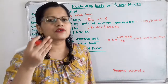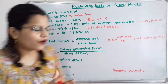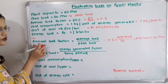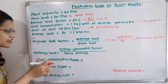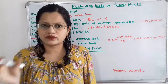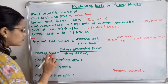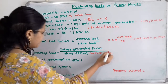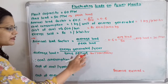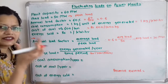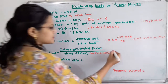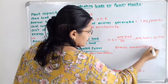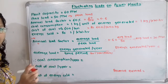Now from this average load we can calculate the energy generated per year. Annual load factor is given for one year, so we take the time period for one year in hours. Average load equals energy generated per year divided by time period. Therefore, energy generated equals average load multiplied by time period in hours for one year.